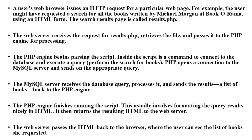This is an example of how user input is provided through HTML and a particular query is executed and displayed in the browser. First, you have the author Michael Morgan as the input and search for that particular author name in the book table. If found, it displays the output; if it fails, it returns an error result. The web server receives the request from the HTML form, passes it to the PHP engine, which executes the query, opens the connection, processes the result, and finally the PHP engine displays the query result in the browser.